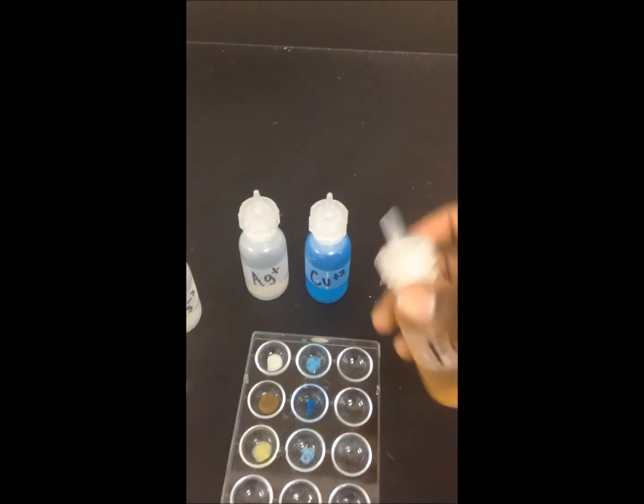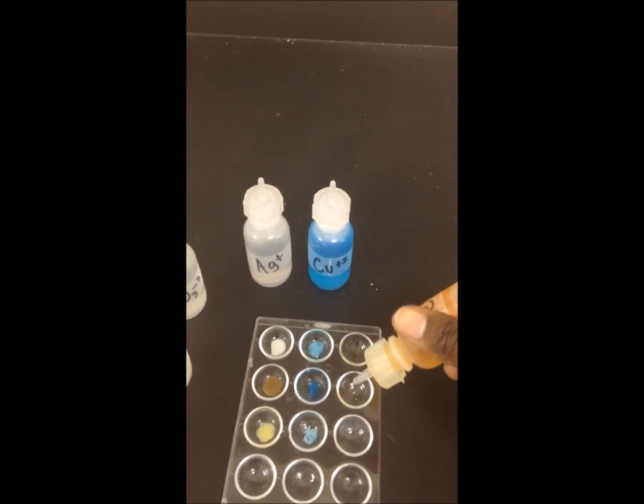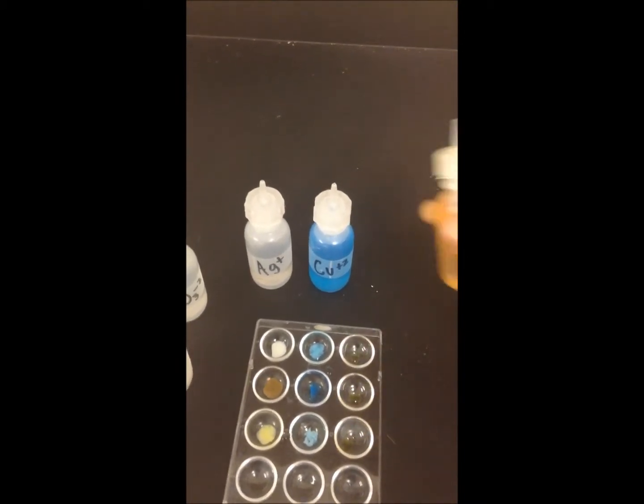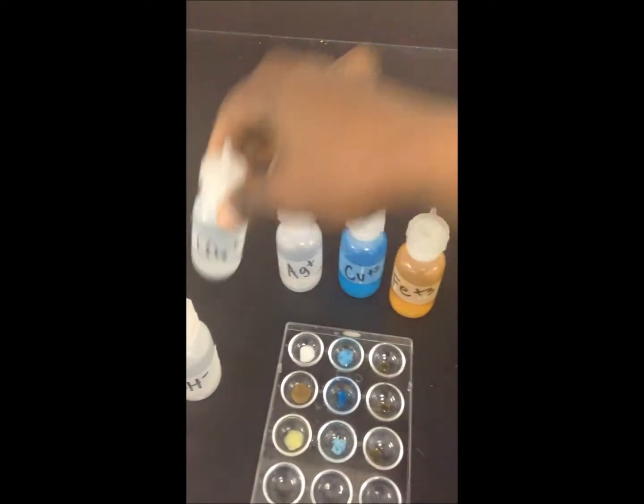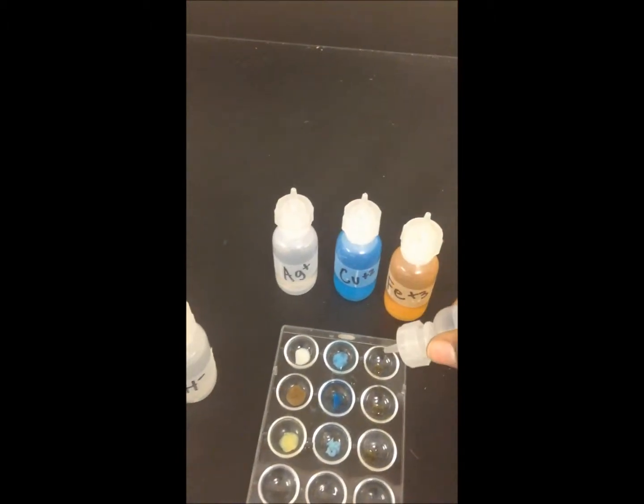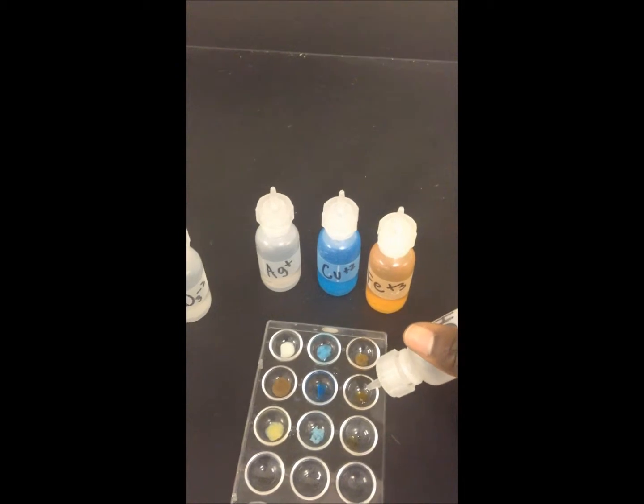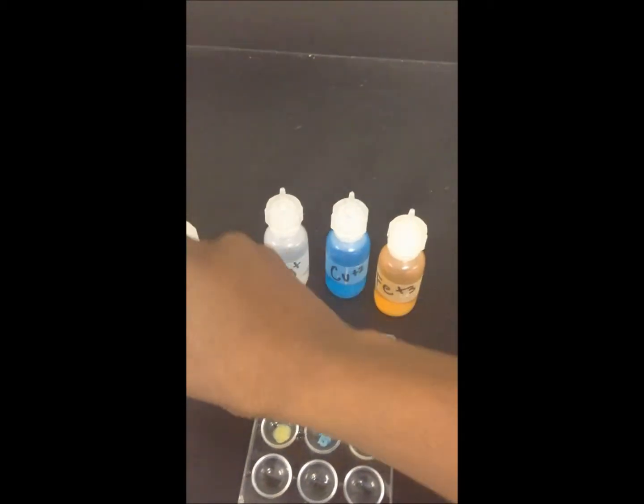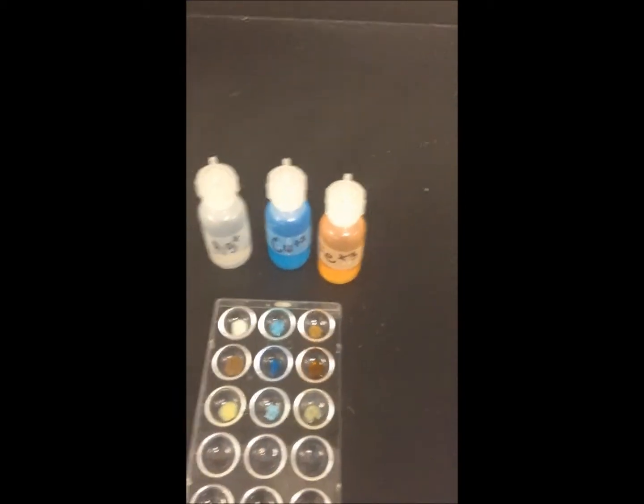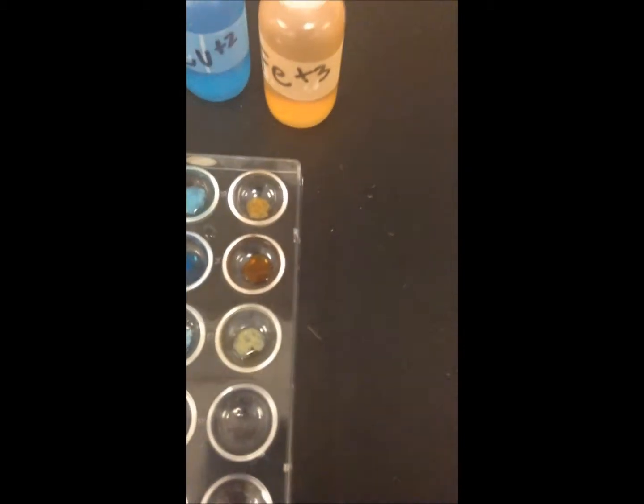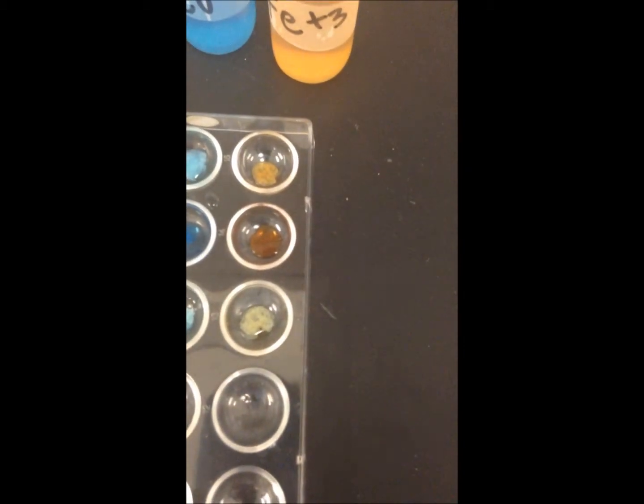Lastly we'll do Fe plus three. Put them in each well, and now for our anions. Carbonate in the first well, hydroxide in the second, and lastly we have phosphate in the third. And we can now look at the colors that we see and write those down.